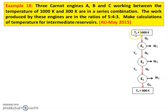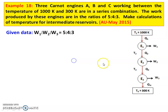Source temperature T1 equal to 1000 Kelvin. Sink temperature T4 equal to 300 Kelvin. Between engine 1 and engine 2, intermediate temperature is T2. Between engine 2 and engine 3, intermediate temperature is T3. The question is to find T2 and T3, i.e., calculate the temperature of the intermediate reservoirs. Given condition: W1 is to W2 is to W3 equal to 5 is to 4 is to 3.